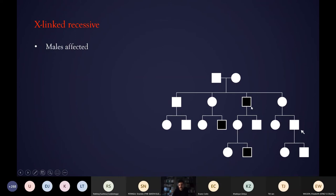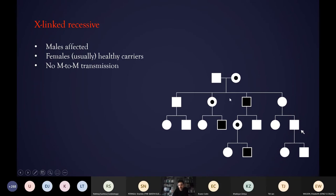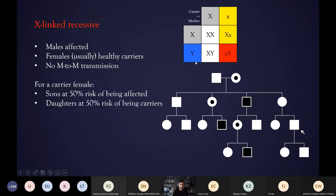The way this tends to run in families is that males are affected, females are carriers and are usually healthy — sometimes they can show some mild signs. Crucially, there is no male-to-male transmission, because a man passes his Y chromosome on to his sons. If you ever saw father-to-son transmission that would completely rule out this being an X-linked condition. For a carrier female with one normal and one abnormal copy, there is a 50% chance of passing on that abnormal copy: if passed to a daughter she'll be a carrier, if passed to a son he will be affected.